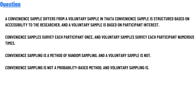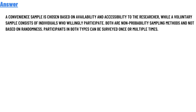Convenience sampling is not a probability-based method — and that is the correct answer. A convenience sample is chosen based on availability and accessibility to the researcher, while a voluntary sample consists of individuals who willingly participate. Both are non-probability sampling methods and are not based on random selection. Participants in both types can be surveyed once or multiple times.